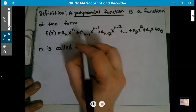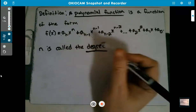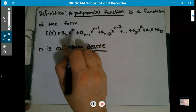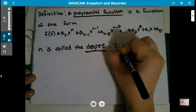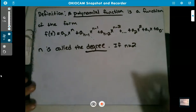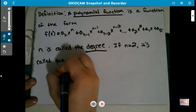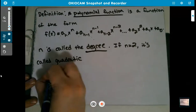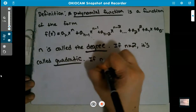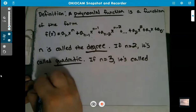The highest power n is called the degree. If the degree is 2 — meaning x² is the highest term — it's called quadratic. If the degree is 3, so the highest power is 3, it's called cubic. There are terms for degree 4, 5, and so on, but they're not used as frequently so we won't go through all of them.